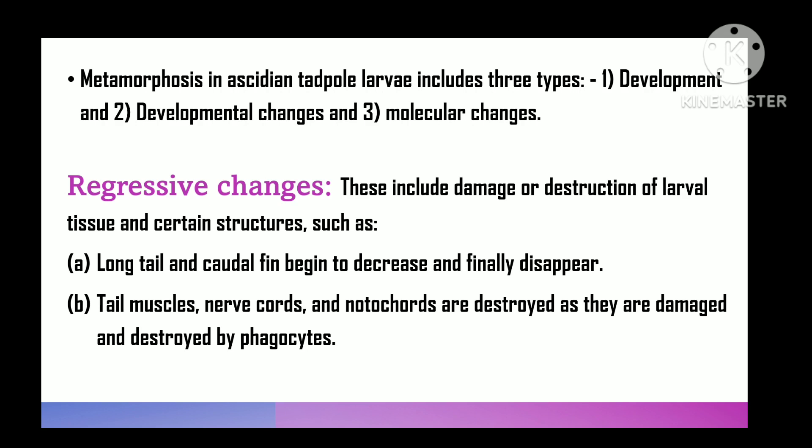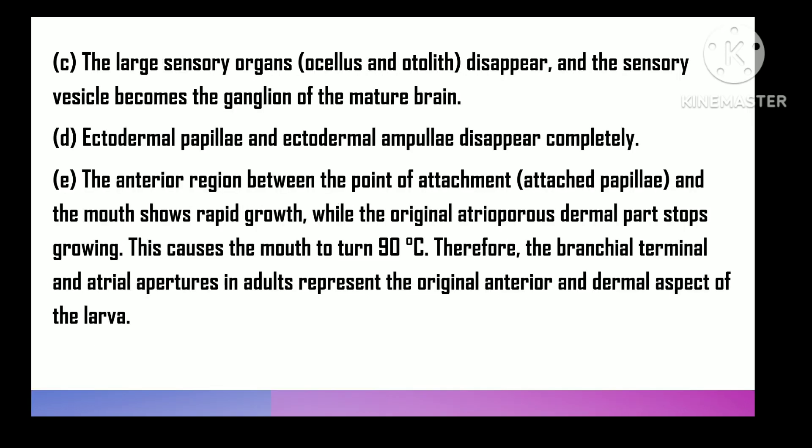The long tail with caudal fin starts reducing and finally disappears. Caudal muscles, nerve cord, and notochord disappear as they break down and are consumed by phagocytes. Larval sense organs — the ocellus and otolith — are lost, and the sensory vesicle is transformed into the adult cerebral ganglion.